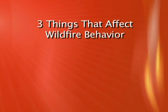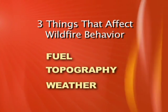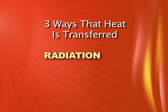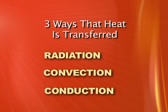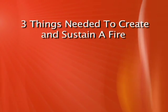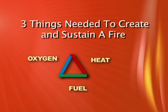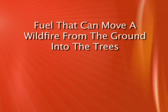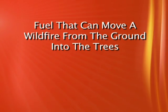Let's review. What are the three things that affect wildfire behavior? Fuels, topography, and weather. What are the three ways that heat is transferred? Radiation, convection, conduction. What are the three things needed to create and sustain fire? Oxygen, heat, fuel. And finally, what do we call the fuels that can move a wildfire from the ground into the trees? Ladder fuels.